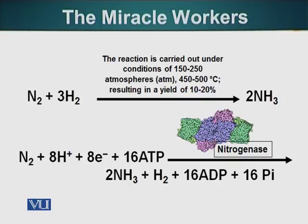This reaction occurs in nature also. Combining nitrogen with hydrogen happens in the roots of certain plants. These plants have a special type of bacteria that make a remarkable compound called nitrogenase. This nitrogenase, the enzyme, can perform the same reaction at ambient temperature — whatever the temperature is outside — taking a molecule of nitrogen, combining it with hydrogen, and producing ammonia.